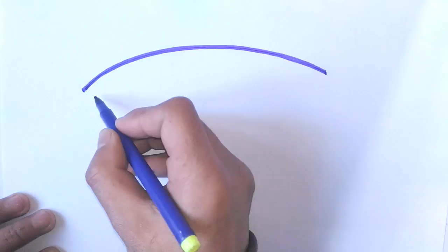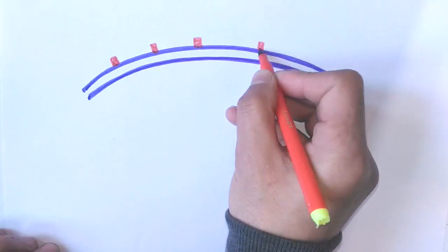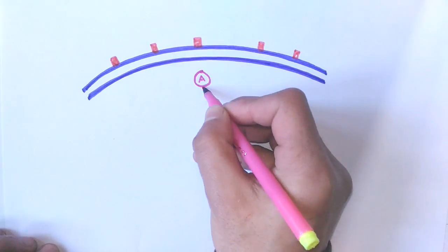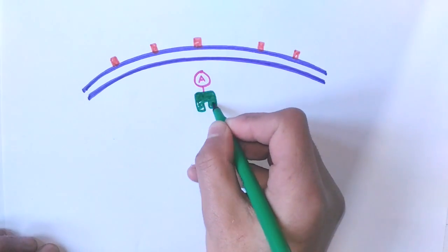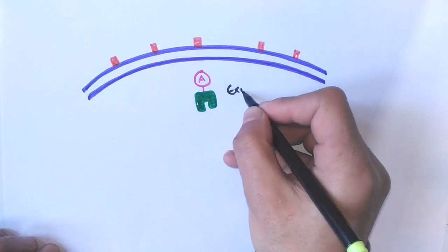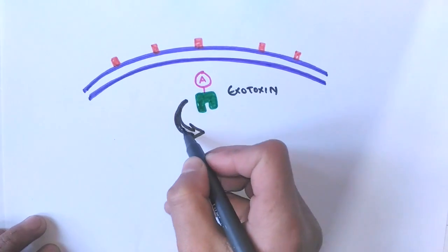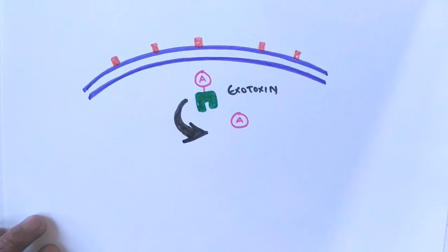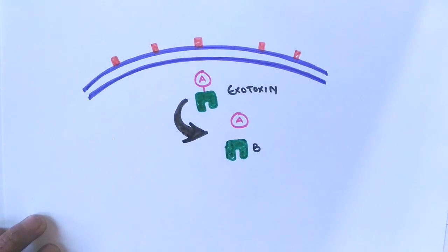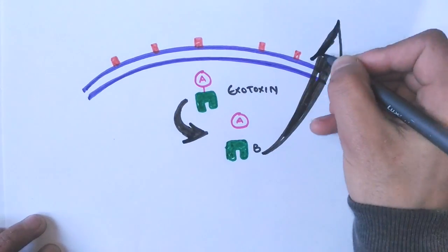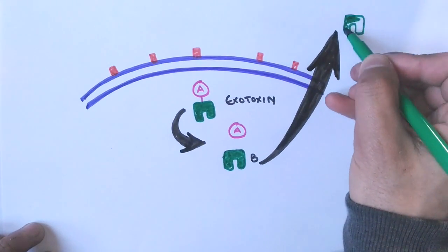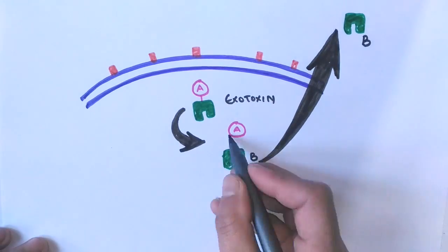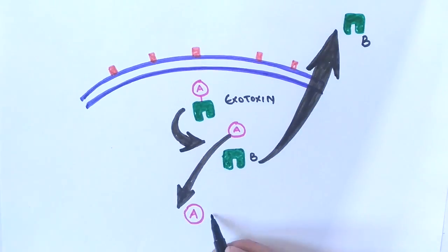In the cytoplasm of the host cell, the exotoxin first splits apart, giving two parts: A and B. The B part is sent out of the cell by exocytosis, and the A part is the active part that will target the ribosomes which are under translation process, and eventually it halts protein synthesis.